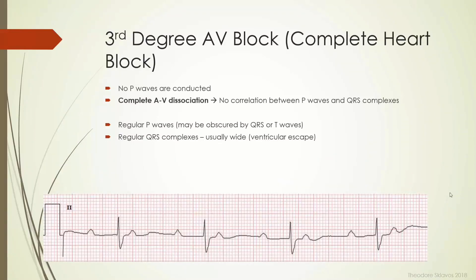In third degree heart block, or complete heart block, there's complete failure of conduction through the AV node and into the ventricles. The atria will continue to fire, the ventricles will continue to fire, but they will do this totally independent of each other, and so we describe that as complete AV dissociation.